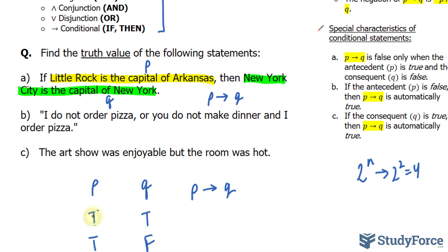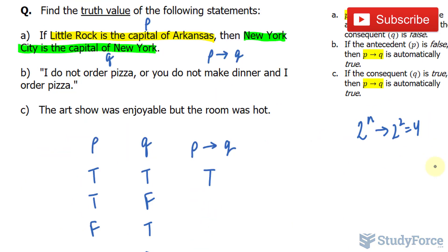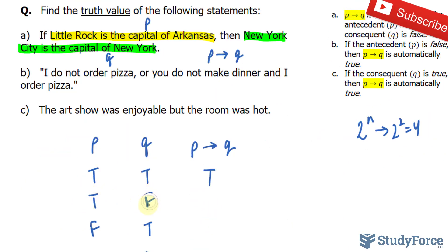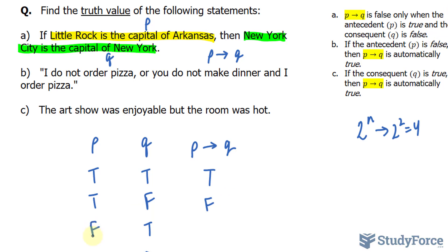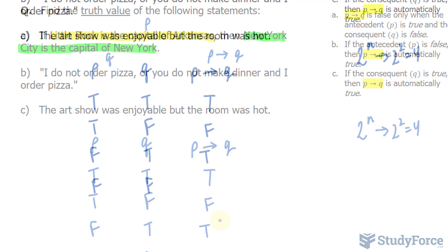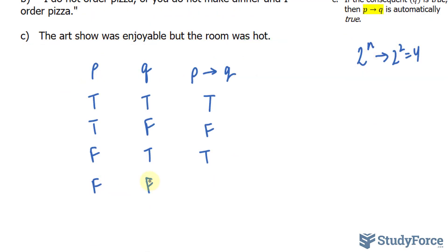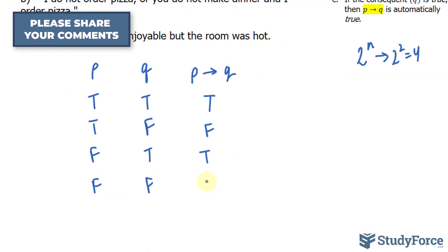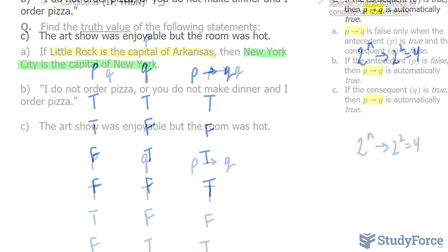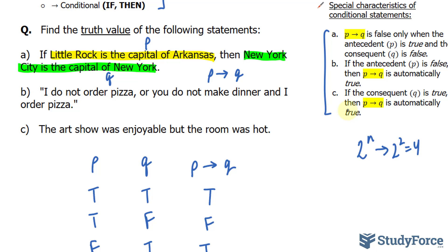In our case here, both of these are true, which means that would be true. The antecedent here is true and this is false, so this should be false — and remember that's the only time when it is false. The antecedent here is false but the consequent Q is true, and that makes this true. Finally, if both of them are false, then that makes it true. Think of it as a double negative — technically two negatives make a positive. It's not written here, but you should make a note of it.